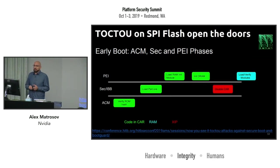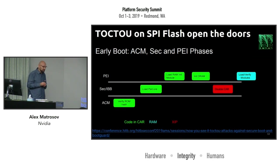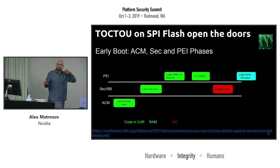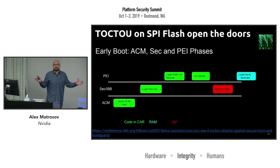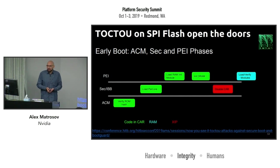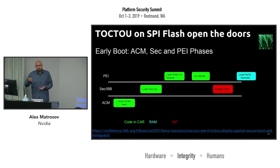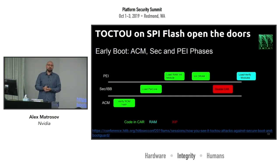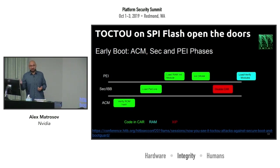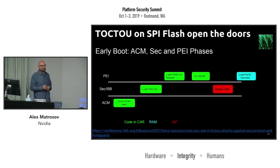I also want to highlight Trammel Hudson's brilliant finding of a race condition vulnerability on the SPI flash. The truth is: authenticated once doesn't mean trusted forever. This issue has been fixed, but it's a design issue — just like the DMA attack I mentioned — and the fix is a very synthetic patch that can in many cases be bypassed.